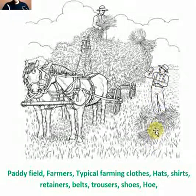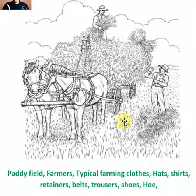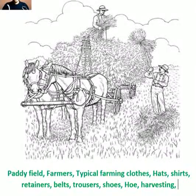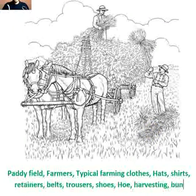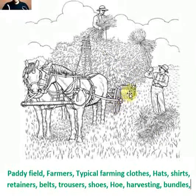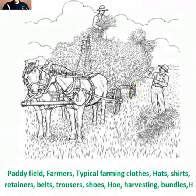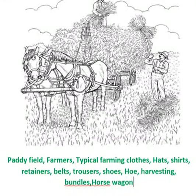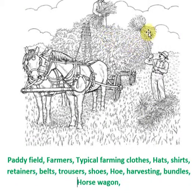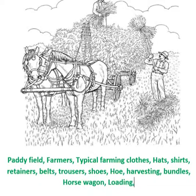They have finished cutting the rice — that's called harvesting. They have finished harvesting the rice and have tied the rice into small bundles. The farmer is putting the bundles from the ground onto the horse wagon. This action is called loading. He is loading the rice bundles onto the horse wagon.